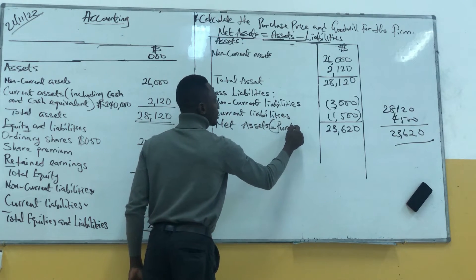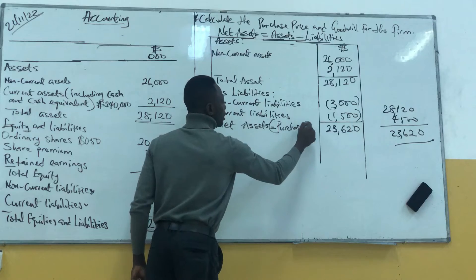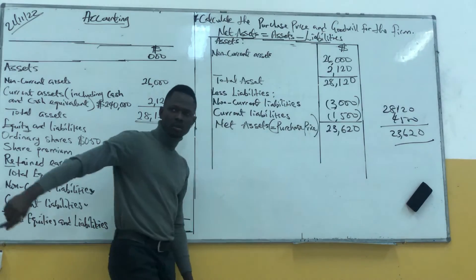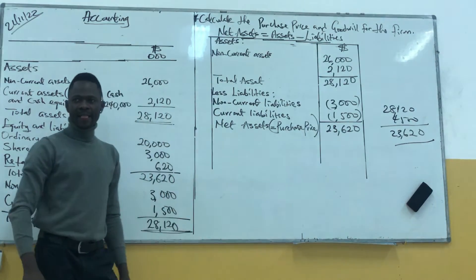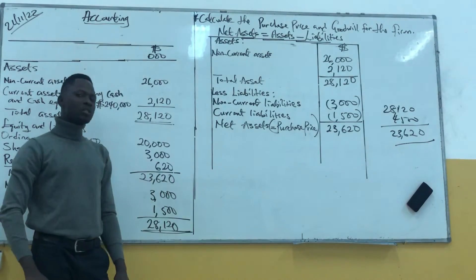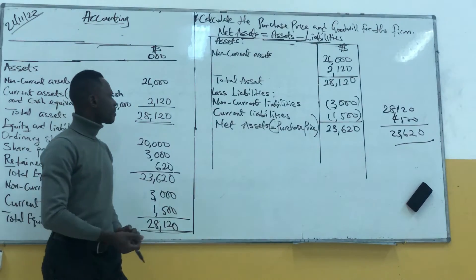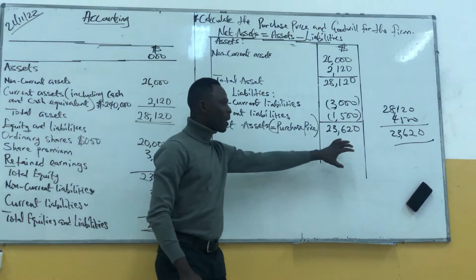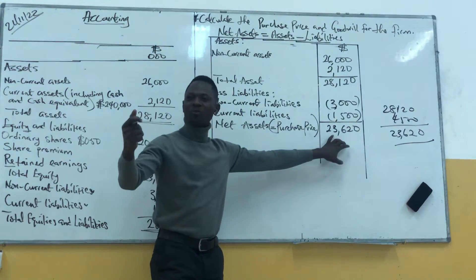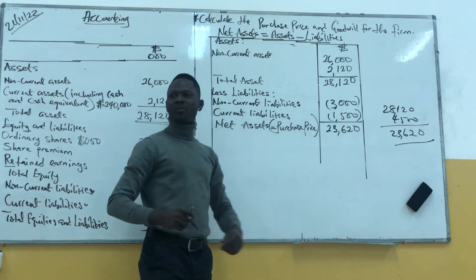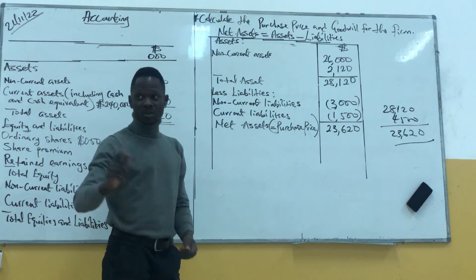So $23,620 becomes our net assets, which is the same as the purchase price. Any questions about this? No? Thank you. Now we have the purchase price — next we need to find the goodwill.